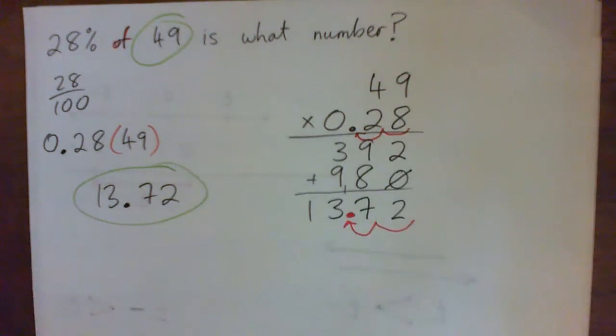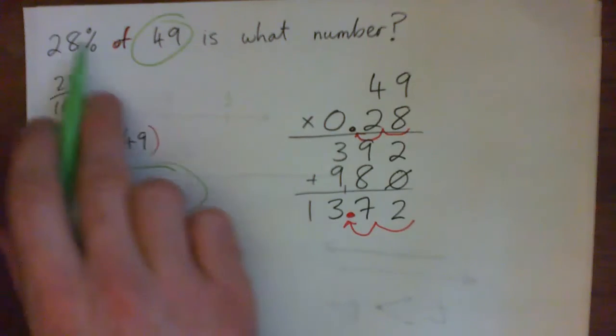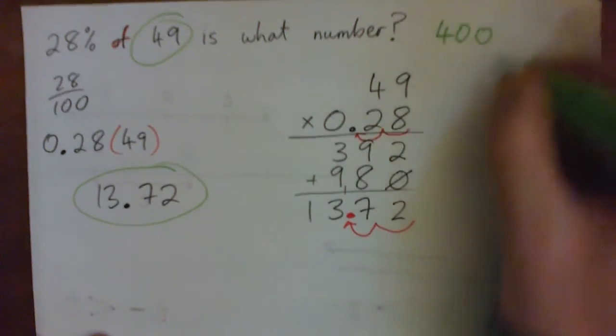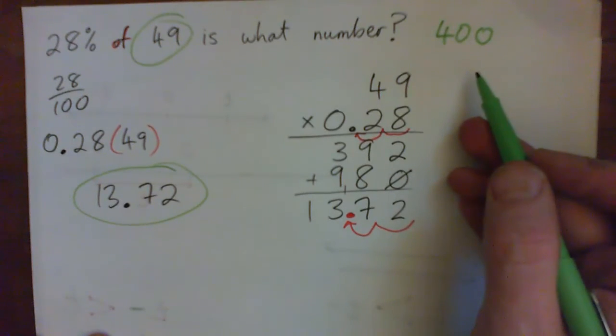I mean, like if for example you were getting 28% of 49, your answer was something like 400, would that look right? No.